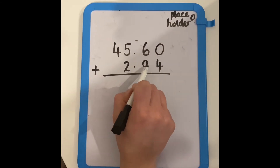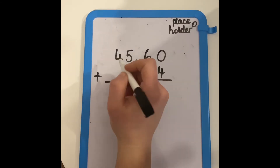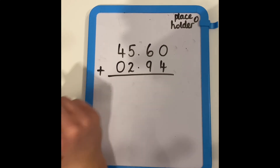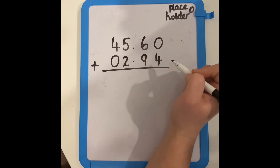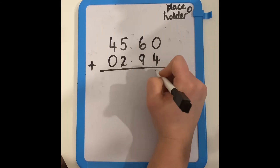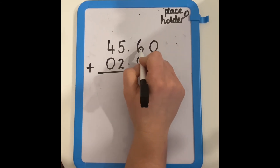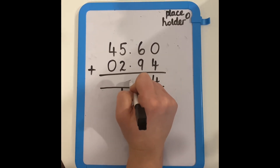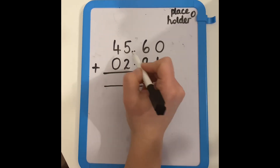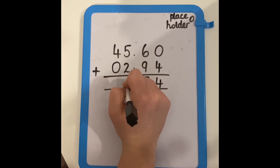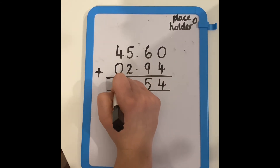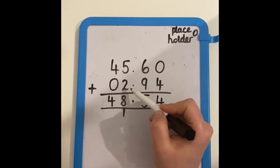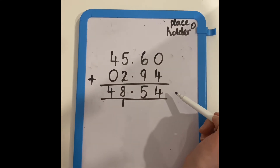I can see that 2.94 doesn't have any tens, so I'm going to use another placeholder in the tens column. It will now be easier to add my two numbers together. I know that zero add four is four. Nine add six is 15, so I need to carry one over into the ones column. Don't forget your decimal point. Five add two is seven, add one more is eight. And four add zero is four. I can see that 45.6 add 2.94 is 48.54.